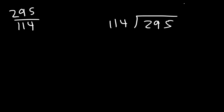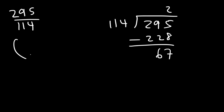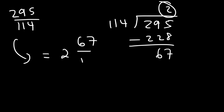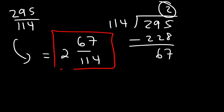114 goes into 295 two times. 114 times 2 is 228, and 295 minus 228 is 67. So this is equal to 2 and 67 over 114, and that's the final answer as a mixed number.